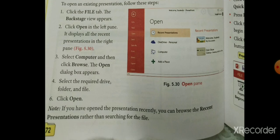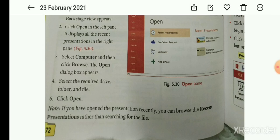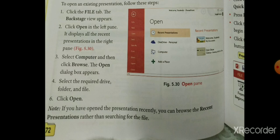Figure 5.13 में Open pane यानि Open dialogue box इस तरह दिखाई देगा। Third, select Computer and then click Browse — Browse button पर click करेंगे तो Open dialogue box appear होगा। Select the required drive, folder, and file — जहाँ save किया है वो select करें। उसके बाद Open button पर click करेंगे तो document open हो जाएगा।